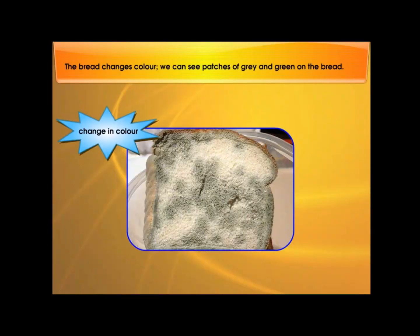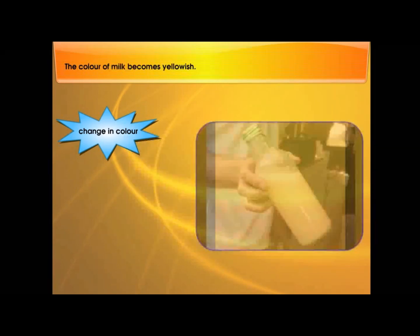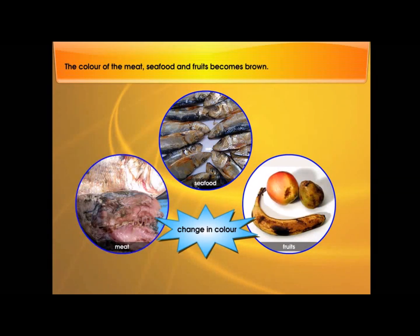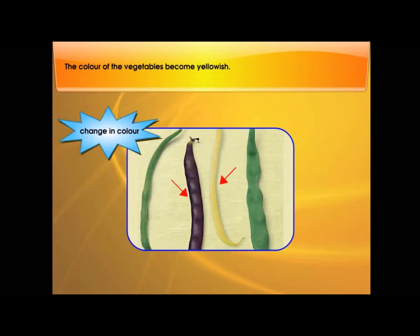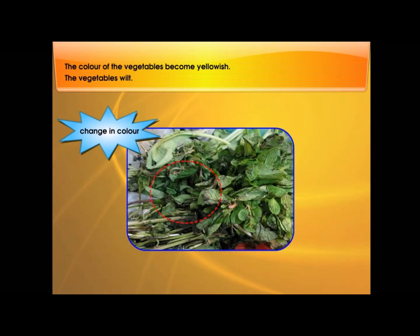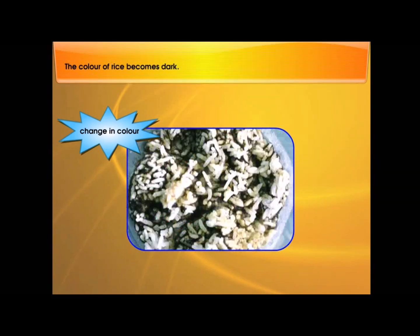The bread changes colour — we can see patches of grey and green on the bread. The colour of milk becomes yellowish. The colour of the meat, seafood, and fruits becomes brown. The colour of the vegetables becomes yellowish, and the vegetables wilt. The colour of rice becomes dark.